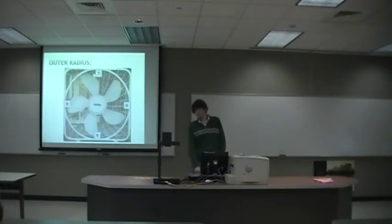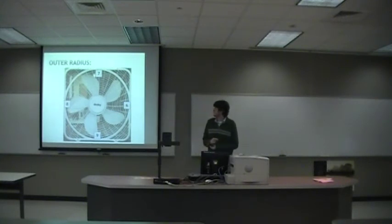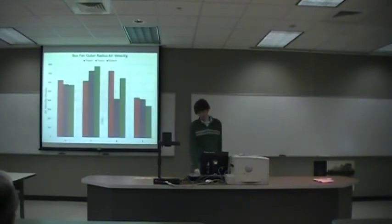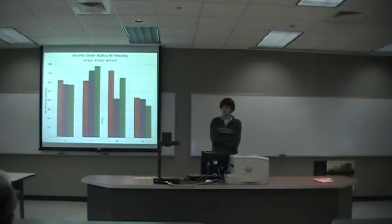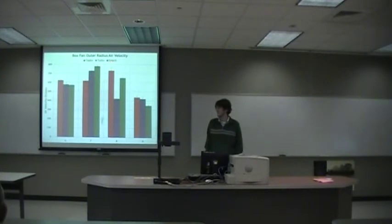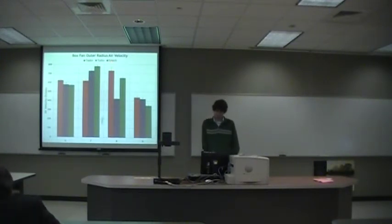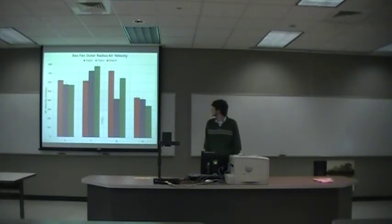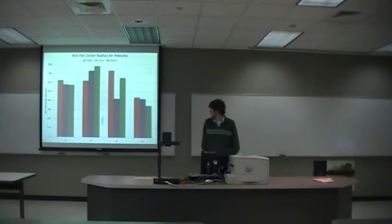After looking at the inner radius, we measured the outer radius of the fan. We got similar data except the velocities were a lot slower than the inner radius and a lot less consistent. At some points the devices really weren't in agreement with each other — at certain points like 0.8, and oddly enough 0.7 and 0.9, readings that were at the same distance from the middle were much different from each other.